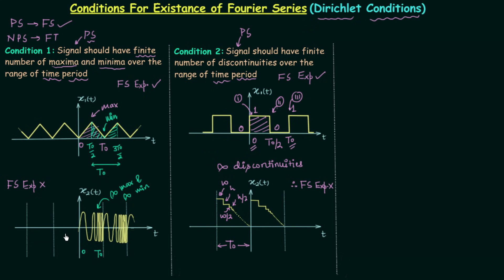Returning to the x2(t) example from condition 1: the first cycle has duration TC1, the second cycle has duration TC1/2, the third has TC2/2, and so on. In this way we get infinite number of cycles within one time period, and therefore infinite maxima and minima, which is why condition 1 was violated.